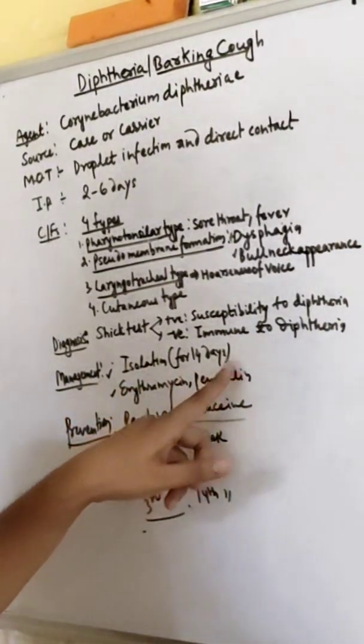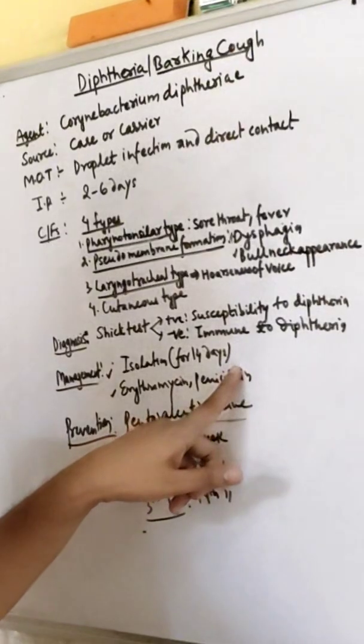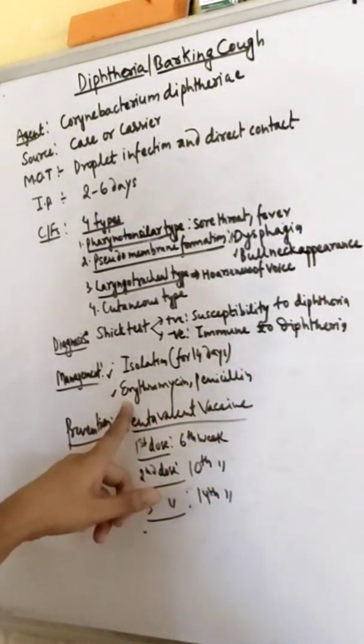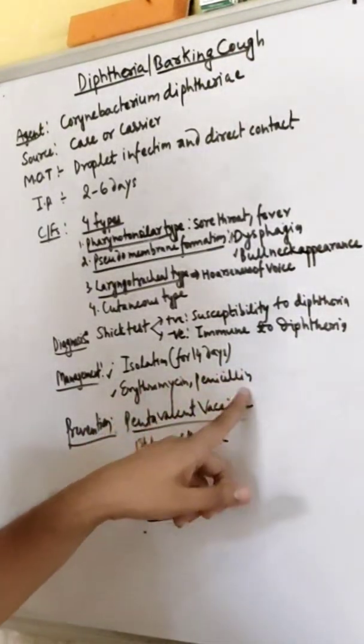For management, isolation is required for 14 days, which is 2 weeks. Antibiotics such as erythromycin or penicillin are given.